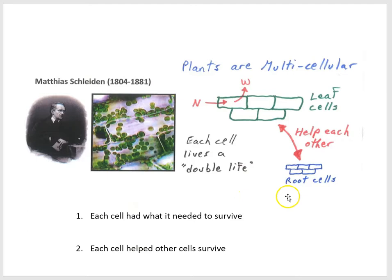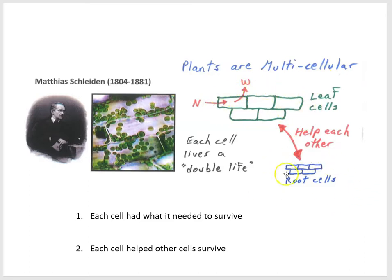So Schleiden made important contributions in helping us understand that plants are multicellular. He went on to help us understand what's happening in different parts of the plant. For example, the leaf cells had a different appearance under the microscope compared to the root cells. He began to suspect that the different appearances were related to the different functions — the different jobs that the cells were performing.